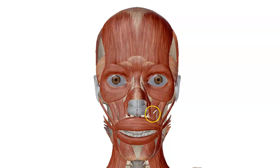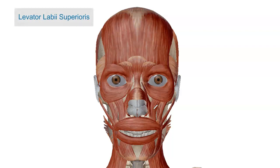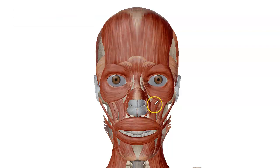This muscle right here is going to the top of the lip and is going to pull the top lip of the mouth upwards, so we call that the levator labii superioris. Labii is another word for lip, so levator labii superioris is going to pull the lip upwards.